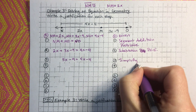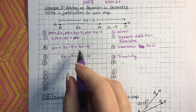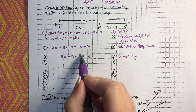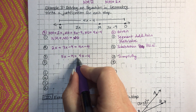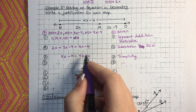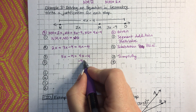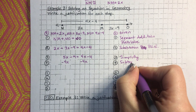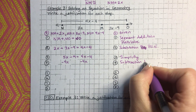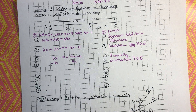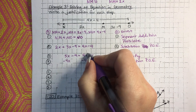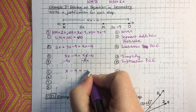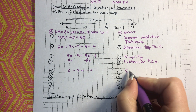We have x's on both sides, so I'm going to move the smaller one. To do that, I need to subtract 4x from both sides — that's the subtraction property of equality. That cancels, and we're left with x minus 9 equals negative 4.